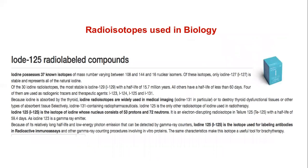Isotopes of iodine are also widely used, especially in medical research and medical imaging. As mentioned in a previous lecture introducing radiolabelling, the isotopes of iodine are widely used for tracing the functioning of the thyroid gland. Iodine-125 in particular is used for labeling antibodies in radioactive immunoassays and gamma-ray counting procedures involving proteins.